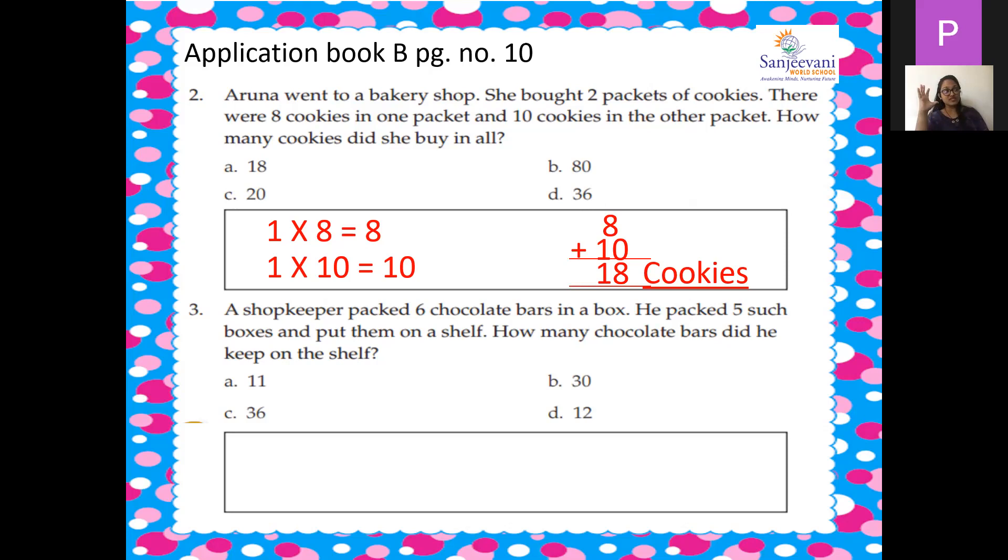5 boxes that you will write for. So 5 into 6, that is 30 chocolate bars he kept on the shelf. So now you can just pause the video and you can write down the answer in your application book children.